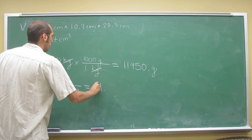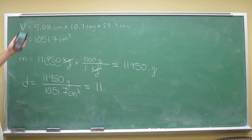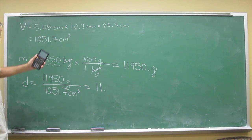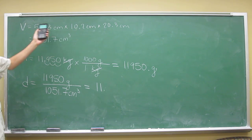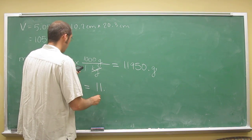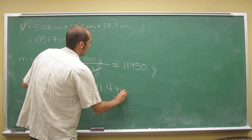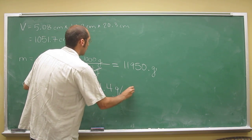But remember, we've got to go to the number with the least number of sig figs. So this has three, three, three, three, and this has five. So three is what we're going to. So we've got to round this up to 11.4 grams per centimeters cubed.